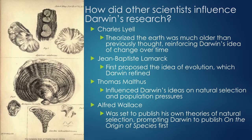This is a breakdown of how those scientists contributed to Darwin's research. Lyell's idea that Earth was much older reinforced change over time. Lamarck first proposed the idea of evolution as change over time. Malthus's ideas about human populations influenced Darwin's ideas on population pressures for other organisms. Finally, Alfred Wallace — after Darwin first started his research, he sat on it for a long time, wanting to refine it and hesitant due to his religious beliefs. When he found out Alfred Wallace was set to publish a similar theory of evolution, he went ahead and published his own.